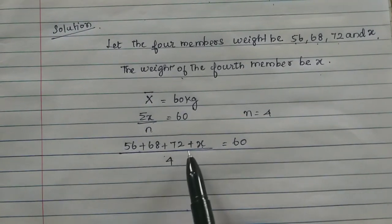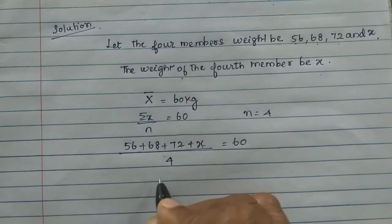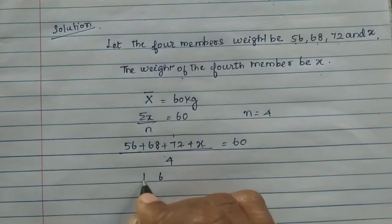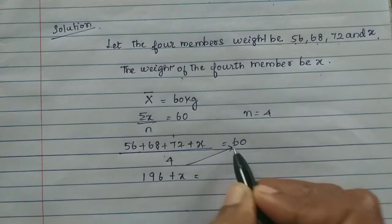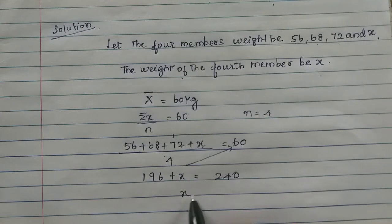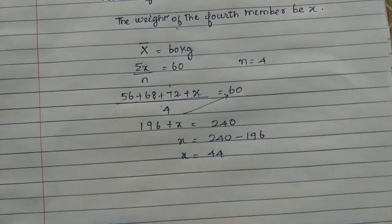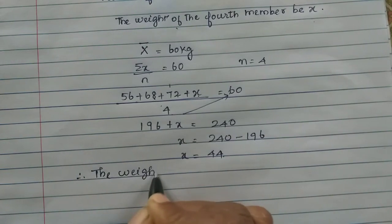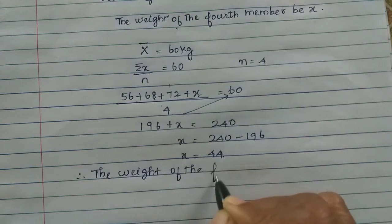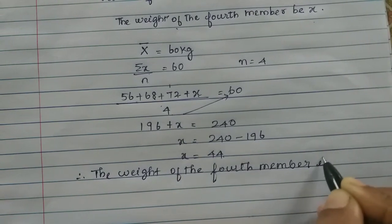Now, 56 plus 68 plus 72 equals 196. So 196 plus x divided by 4 equals 60. Multiplying both sides by 4 gives 196 plus x equals 240. Therefore x equals 240 minus 196, which is 44. The weight of the fourth member is 44 kg.